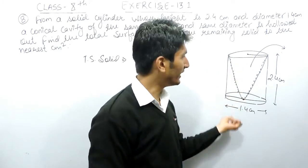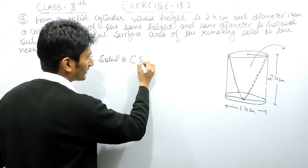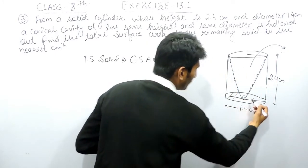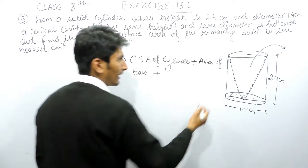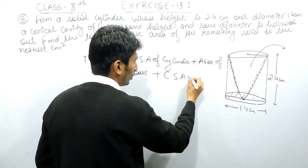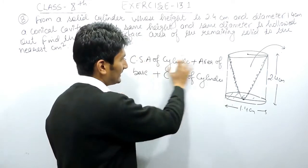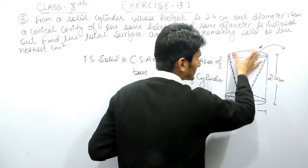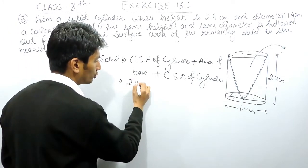To find the total surface area of this remaining solid, I have to add all three surfaces. That will be: the curved surface area of the cylinder, plus the area of the base of the cylinder, plus the curved surface area of the cone. One important thing — the top circular face of the cylinder won't be visible because that surface has been taken out, so there will be a hole there.